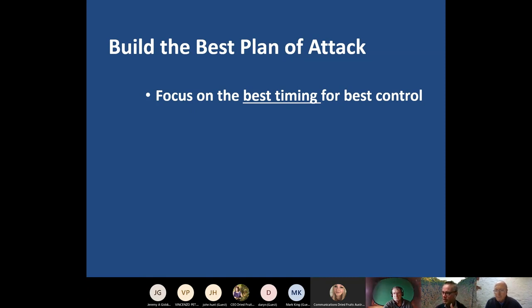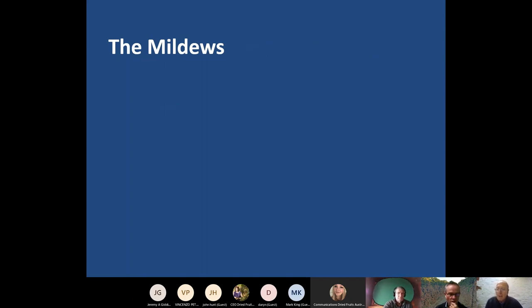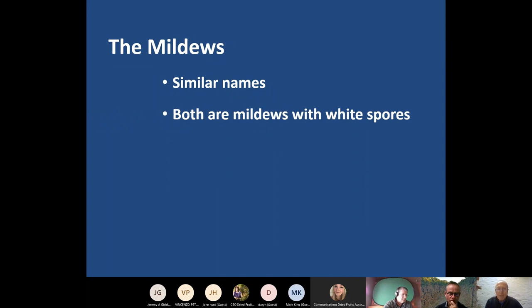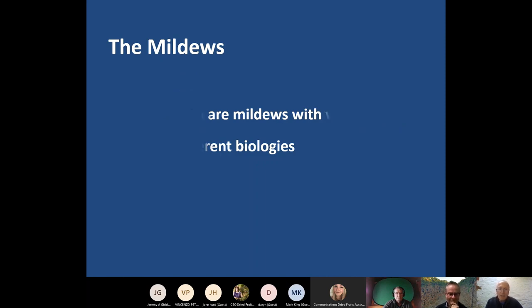The two mildews are our biggest issues. Let's go into the approaches on those. The mildews cause confusion because of their names — powdery mildew and downy mildew. Their similar names lead to potential confusion, and likewise both mildews produce white spores. However, they have very different biologies and behave very differently — similar names but different behavior.